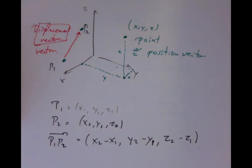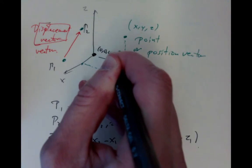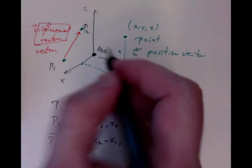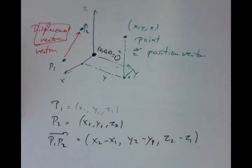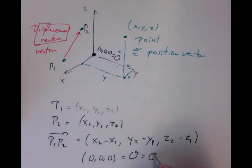There's one special vector in the picture, which is the zero vector — the vector whose coordinates are (0, 0, 0). It's often called O or 0, and it's referred to as the origin.